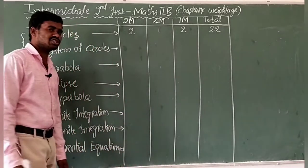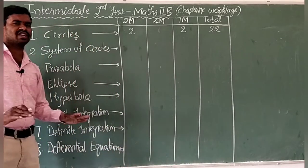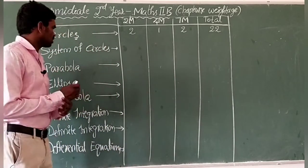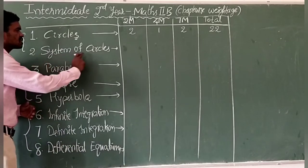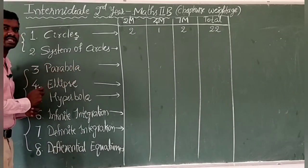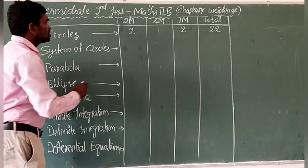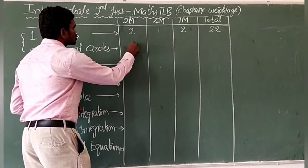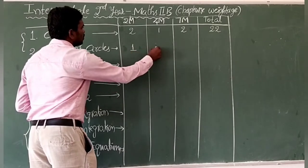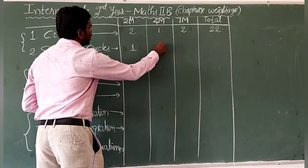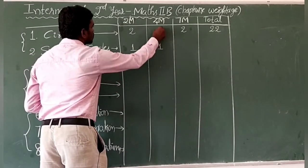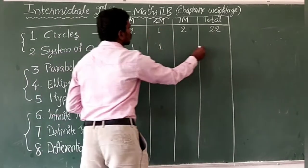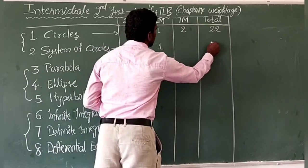Maths 2B is not difficult — it is easy. The second chapter is System of Circles. From this chapter we get one 2-mark question and one 4-mark question, so a total of 2 plus 4 = 6 marks.